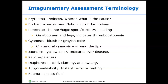Integumentary assessment terminology — you need to know all of these terms and be able to describe them thoroughly. Erythema is redness: where is it located and what is the cause? Ecchymosis is bruising: note the color. Petechiae are hemorrhagic spots or capillary bleeding — could be indicative of thrombocytopenia. Cyanosis: is it bluish or grayish in color, or circumoral, around the lips? Jaundice: do they have a yellow color to the skin, which could be indicative of liver disease? Pallor: are they pale? Diaphoretic: are they cold, clammy, or sweaty? Turgor: is it elastic with instant recoil or does it tent? Edema: is there excess fluid?